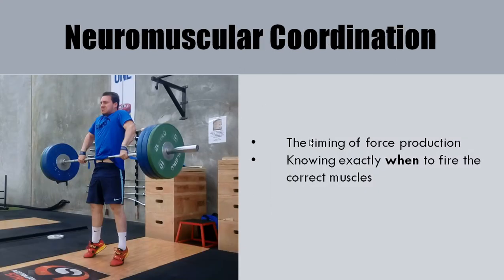Neuromuscular coordination is the timing of force production — knowing exactly when to fire the muscles. For example, in a drop jump, where you jump off a box and then perform a vertical jump as high as possible, practice and coordination allow the nervous system to know exactly when to fire those muscles to get the most out of both the stretch shortening cycle and ground contact time.